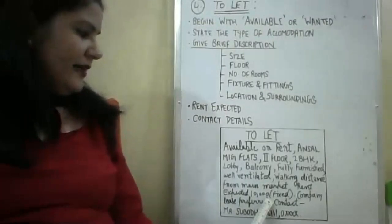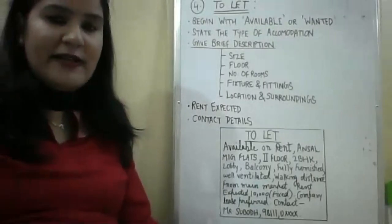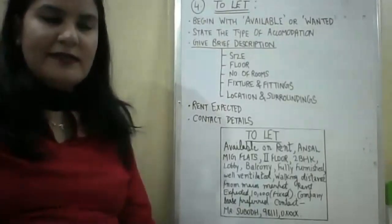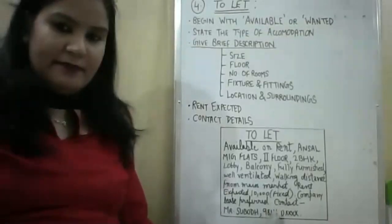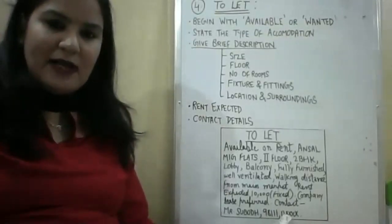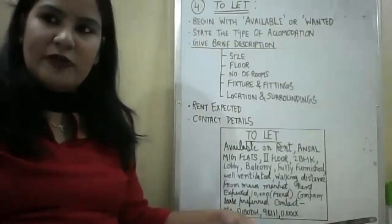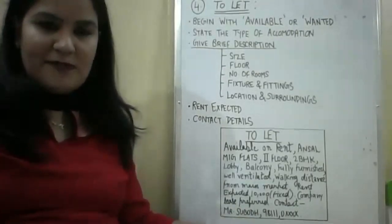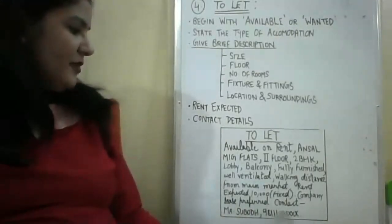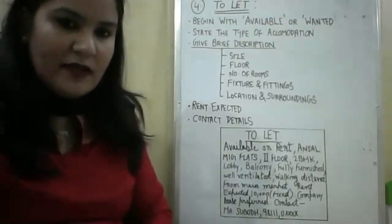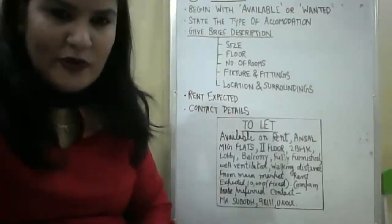Rent Expected: 10,000 (Fixed) — sometimes it is written 'Negotiable,' meaning after meeting you can decide. Company Lease Preferred — sometimes companies hire flats for their employees, so this is preferred as well-maintenance is assured. Then: Contact Mr. Subodh — and the phone number is given. Have you noted down the example? This is just like 'Flat for Sale' which we have already done; the variation here is 'Rent Expected' instead of 'Expected Price.'